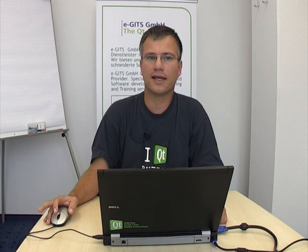How can we address the data? We need the QModelIndex, and the QModelIndex refers to an item within our model. It contains all the information to specify the location. The location is given in rows and columns, and for hierarchical models it will also have the parent-child information. Looking at the QModelIndex API, we have the methods for row, column, and if we have a hierarchical model we also have the parent method to identify the parent of a child item. We have an empty QModelIndex if an item does not have a parent.